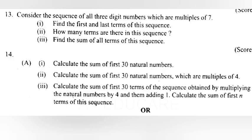3. Calculate the sum of first 30 terms of the sequence obtained by multiplying the natural numbers by 4 and then adding 1. Calculate the sum of first n terms of the sequence.